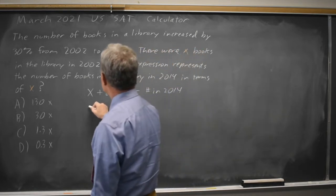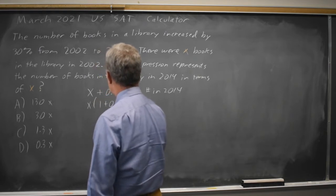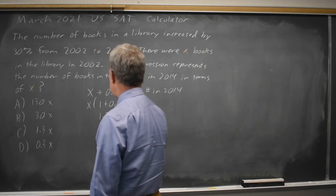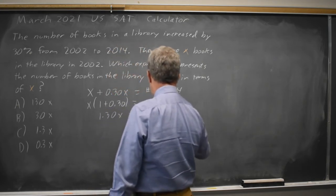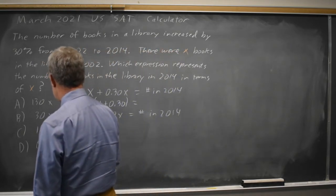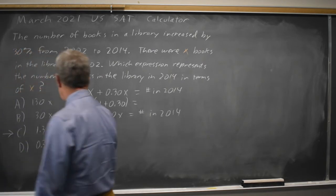Factoring out an X, I get X times 1 plus 0.30, and that is 1.30X equals the number of books in 2014. So that would be choice C, the answer.